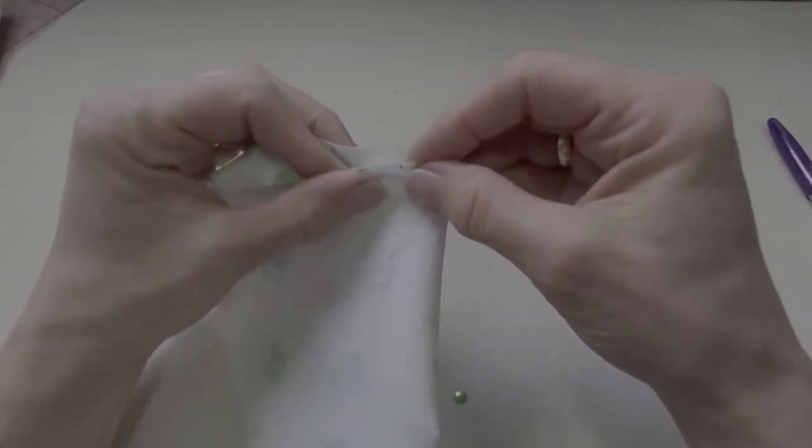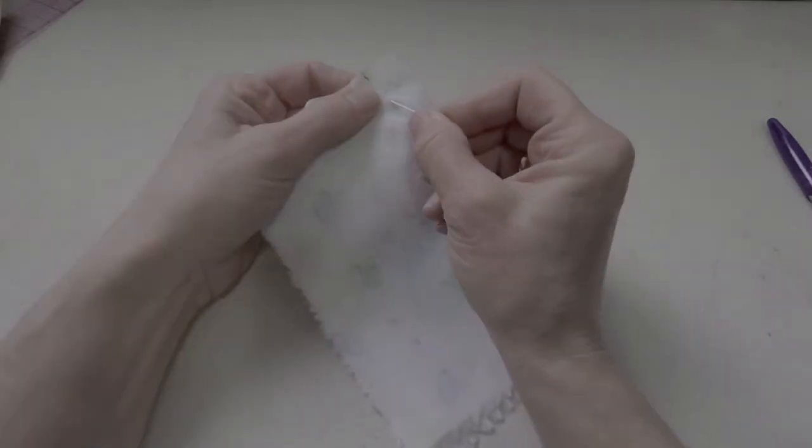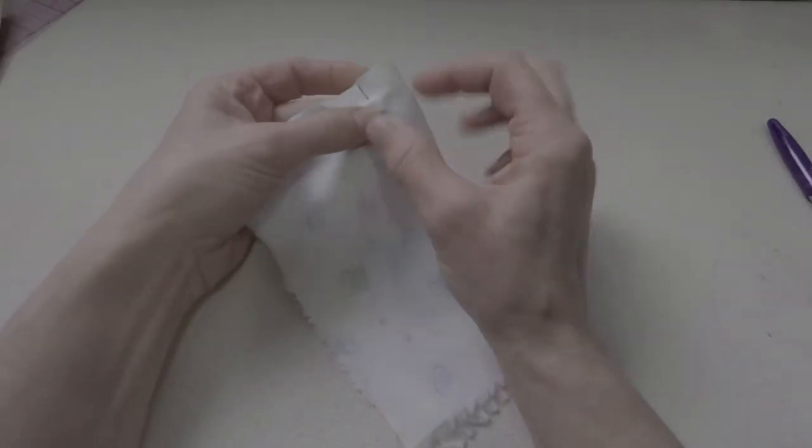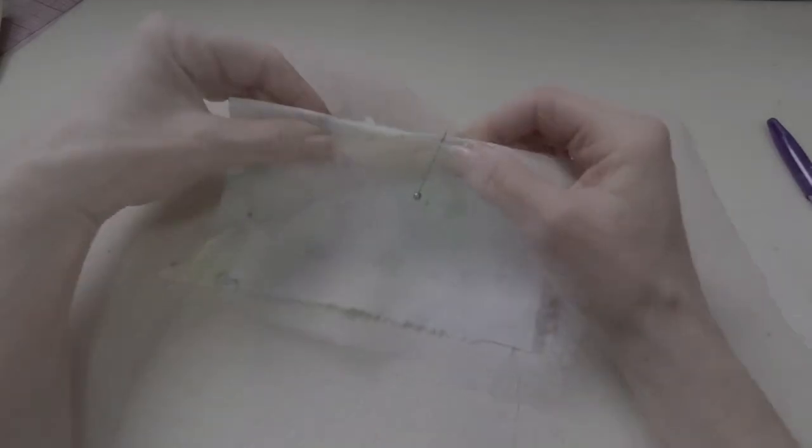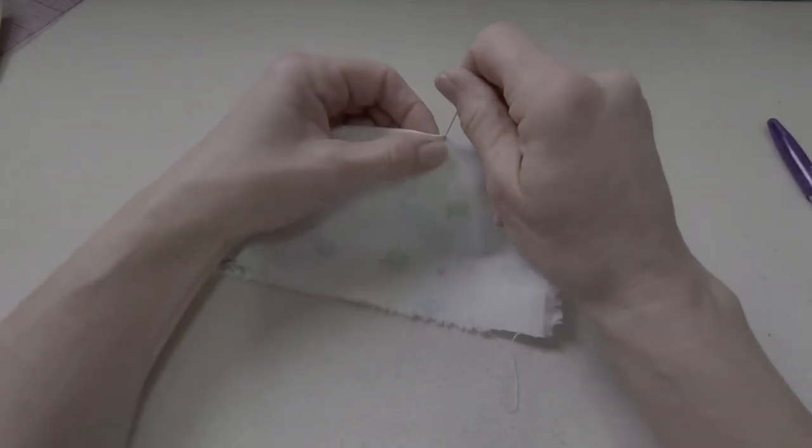Then we'll be folding it to bring those two notches together, the two arms of the dart together, and put a pin vertically pointing towards those notches. Where the fabric is folded comes right to the point of the dart and then a pin there can just be horizontal.